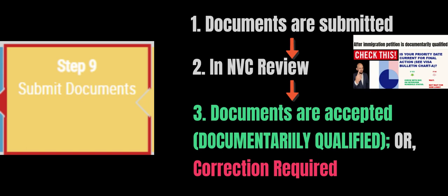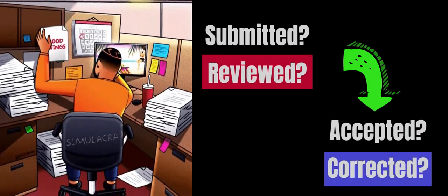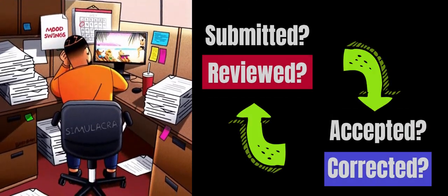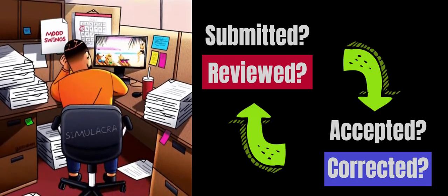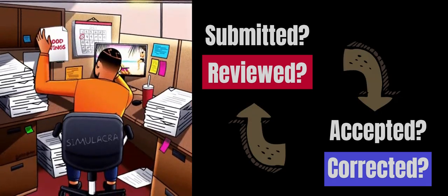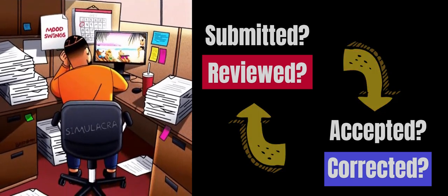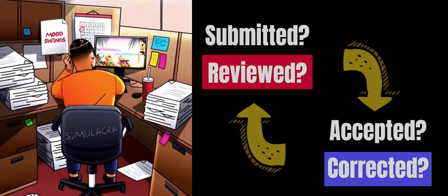In a rainy day scenario, if NVC determines you did not submit the correct documents, you will receive a notification that the status of your case has been updated. When you receive this message, follow the instructions to log in to CEAC and provide additional information or correct the documents. Once you complete that, you will need to resubmit your case for review by pressing Submit Documents. The correction action and submission action repeat until your documents show accepted.